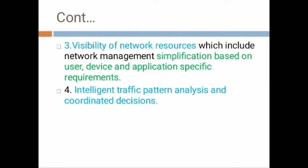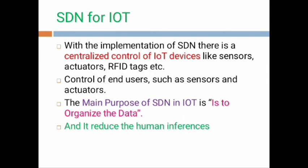Visibility of network resources includes intelligence traffic analysis and coordinated decisions — intelligent traffic pattern analysis. SDN for IoT provides centralized control of IoT devices such as sensors, actuators, and RFID tags, controlled by the end user. The main purpose of SDN is to organize the data and reduce interference.